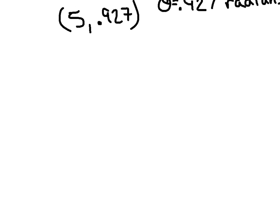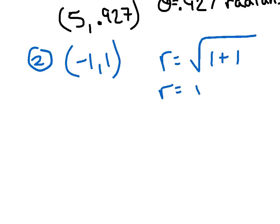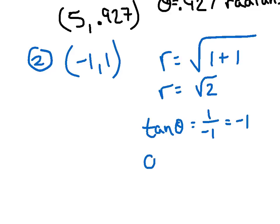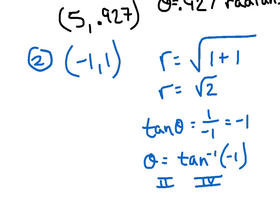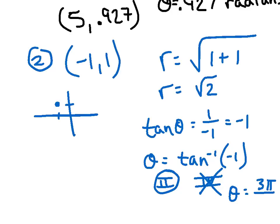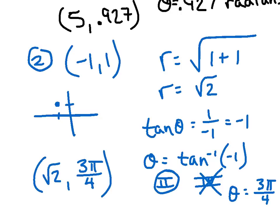Number two: rectangular coordinates (-1, 1). r = √(x² + y²) = √2. Now tan θ = 1/(-1) = -1. The inverse tangent of -1 raises an important point — the answer could be in the second or fourth quadrant. You must visualize where the ordered pair lives: going left 1 and up 1 puts you in the second quadrant. So choose θ = 3π/4, not 7π/4. The final answer is (√2, 3π/4). Saying 7π/4 would be marked wrong.